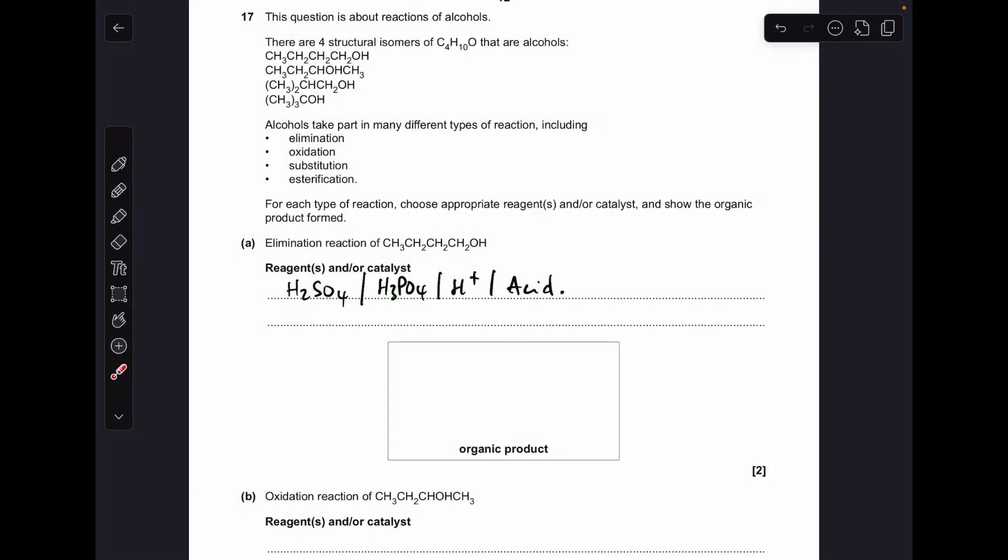So part A, the elimination reaction of an alcohol involves reacting it with an acid, so you could say acid or H plus or specify sulfuric acid or phosphoric acid. What's going to happen is it's going to eliminate a water molecule from the alcohol, so we take the OH and an H from an adjacent carbon and put a carbon-carbon double bond between those carbons, which means the organic product is going to be that alkene there.